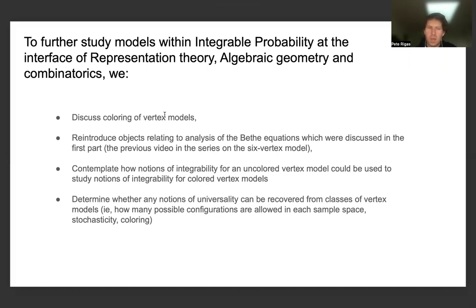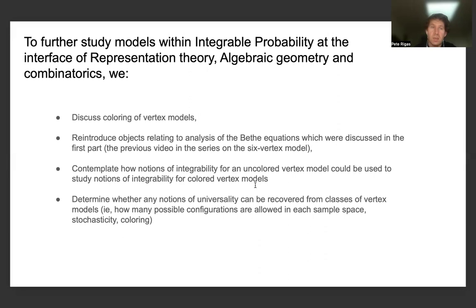To further study models with integrable probability at the interface of representation theory, algebraic geometry, and combinatorics, we discussed the colorings of vertex models. We reintroduced objects relating to analysis of the Bethe equations, and this helped us contemplate how notions of integrability for an uncolored vertex model could be used to study notions of integrability for colored vertex models. In particular, the colored vertex model has a combinatorial geometric interpretation that we weren't necessarily able to fully capitalize on in a previous paper on the Poisson structure and integrability of the Hamiltonian flow for the inhomogeneous six-vertex model in two dimensions.